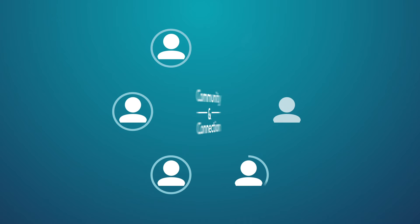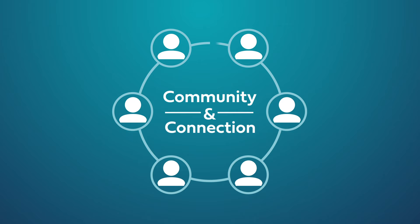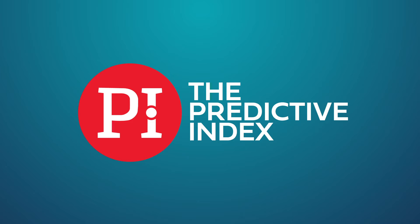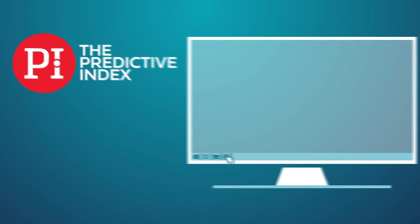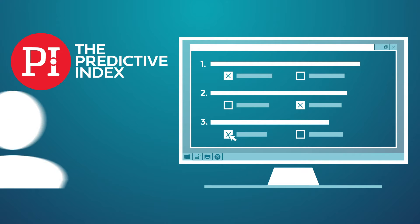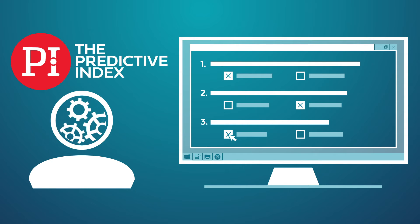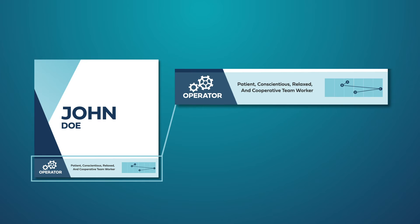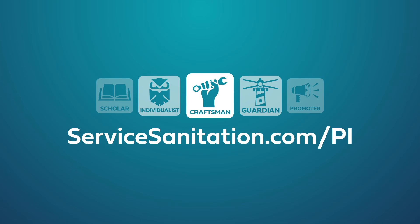At Service Sanitation, we're about fostering community and connection. One way we've been able to actively do that is by the use of the Predictive Index Behavioral Assessment, also known as a PI. At some point during your employment or pre-employment, you took the PI assessment to help us understand what makes you tick. In this video, we'll break down the PI placard so you can understand what it means and how to read it. Accompanying each placard is also a quick reference profile that aligns your results to a profile and description commonly identified through the assessment. To learn more about your profile specifically, please visit servicesanitation.com.